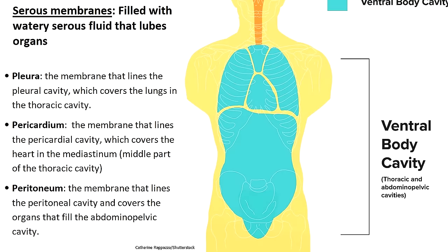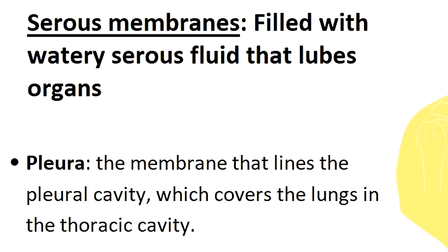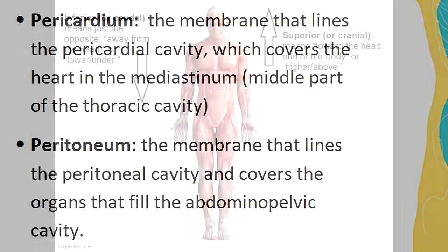The ventral body cavity contains various serous membranes filled with a watery substance called serous fluid, which allows for lubrication and movement of the organs. You have the pleura, which lines the pleural cavity and covers each lung; the pericardium, which lines the pericardial cavity and covers the heart; and the peritoneum, which lines the peritoneal cavity in the abdominal pelvic region.